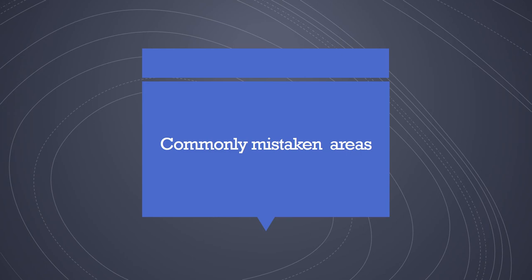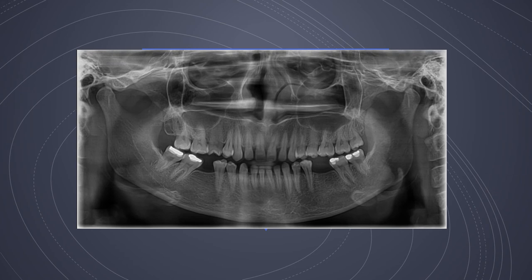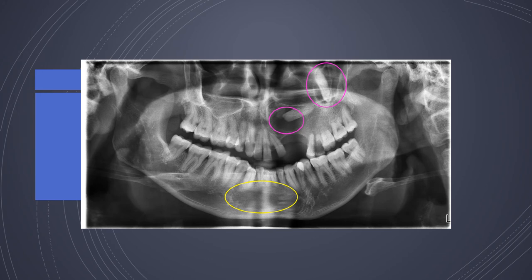Let us look at some commonly mistaken areas. This panoramic radiograph shows a very prominent air shadow — probably blood vessels within the sinus and nasal region. The area highlighted in yellow should not be mistaken for a radiolucency. Also, while concentrating on the impacted canine or lateral, one can totally overlook a tooth impacted high up in the maxilla. This is why it is important to pay close attention and spend time systematically diagnosing the panoramic radiograph.